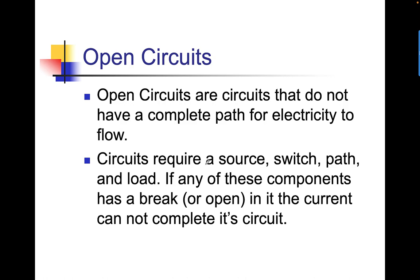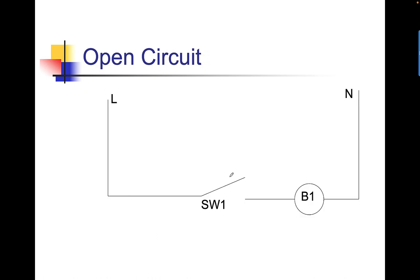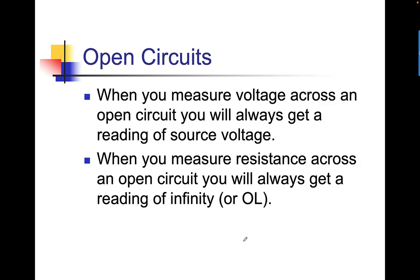Open circuits are circuits that do not have a complete path for electricity to flow. Circuits require a source, a switch, a path, and a load. If any of these components has a break or an open in the current circuit, it cannot complete its circuit. This is an example of an open circuit. See the break here where the switch is open? That electricity cannot jump across that break, so the current flow stops right here at SW1. When you measure voltage across an open circuit, you'll always get the reading of source voltage. Commit that to memory.